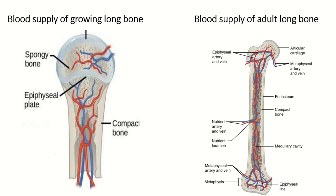This is all about the blood supply of the growing long bone and the adult long bone. In children, the epiphyseal artery is not communicated with the metaphyseal artery due to the presence of the growth plate. In adults, there is no growth plate, so the epiphyseal artery freely communicates with the metaphyseal artery.